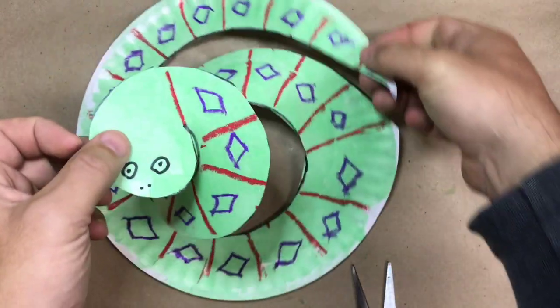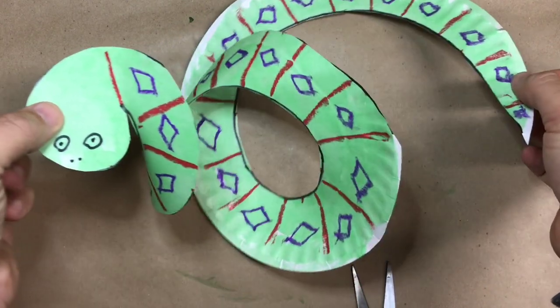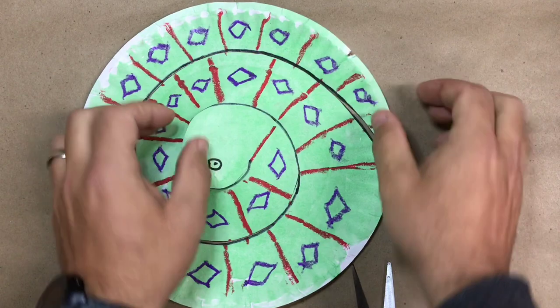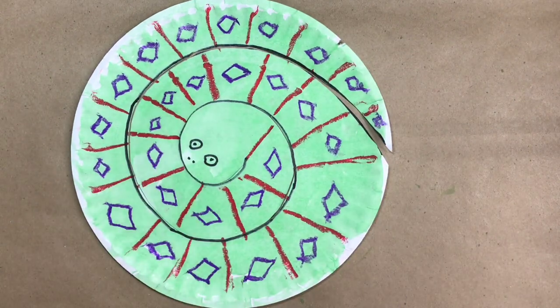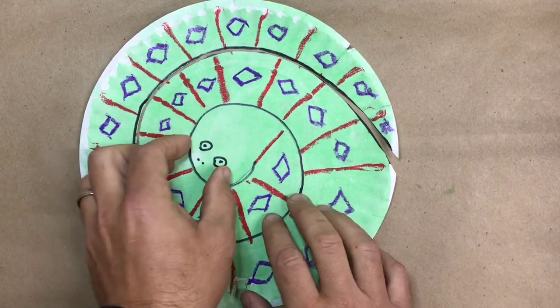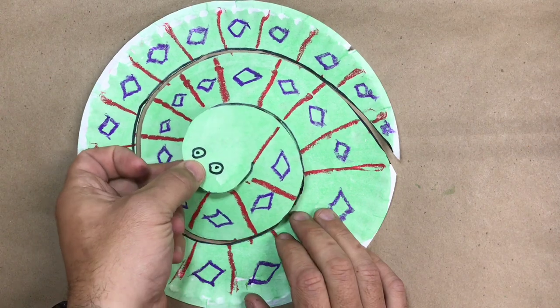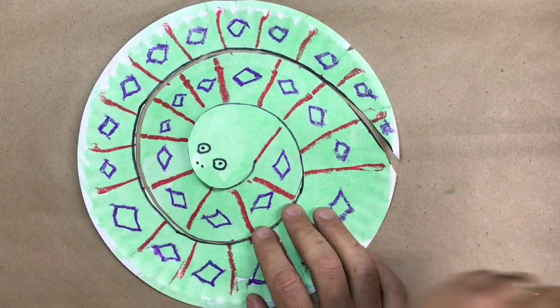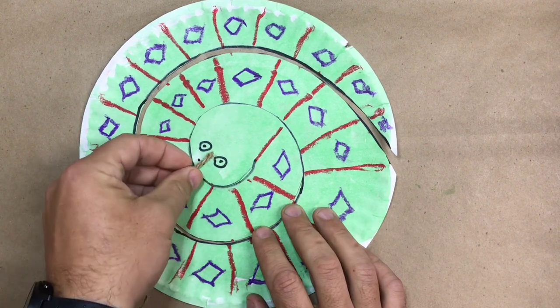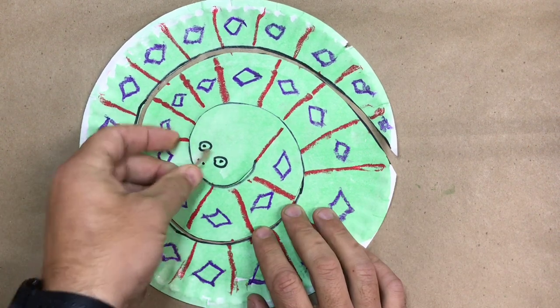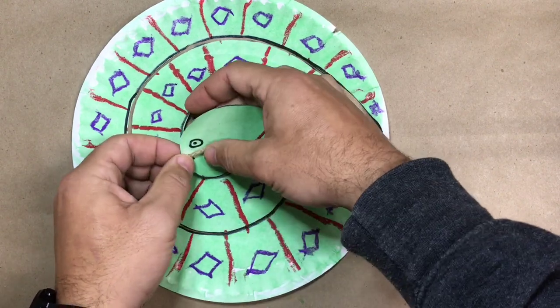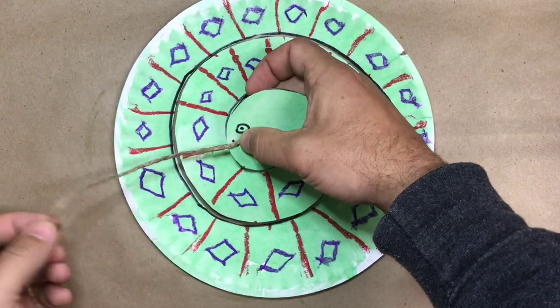So you can see when I grab his head and his tail there's his long body. Once you're finished with that the next thing you need to do is attach a string. Now this is an optional step. You don't need to do this. I'm going to attach a string to his face right here. Now there's a reason and I'll show you in a few minutes about that but it looks kind of like a tongue.